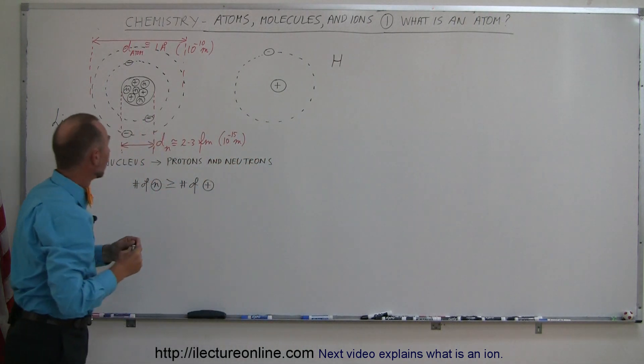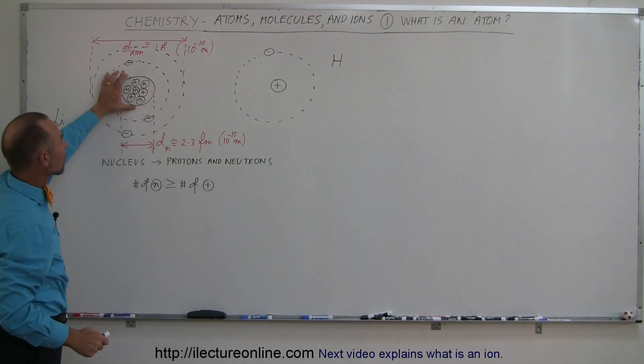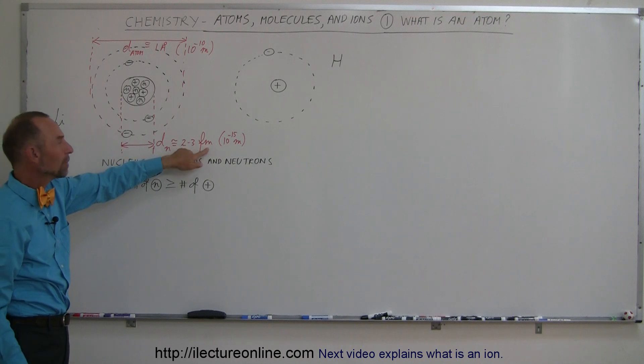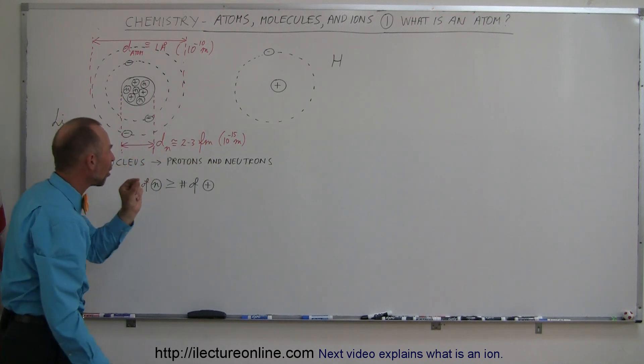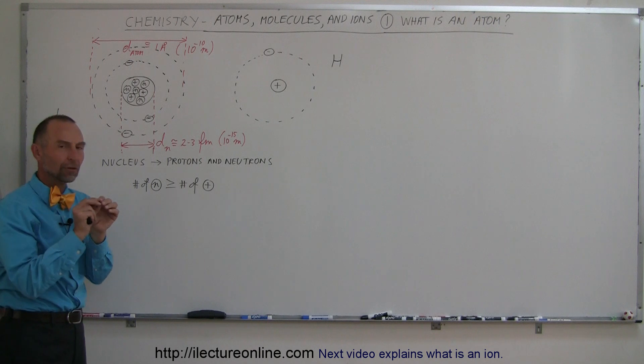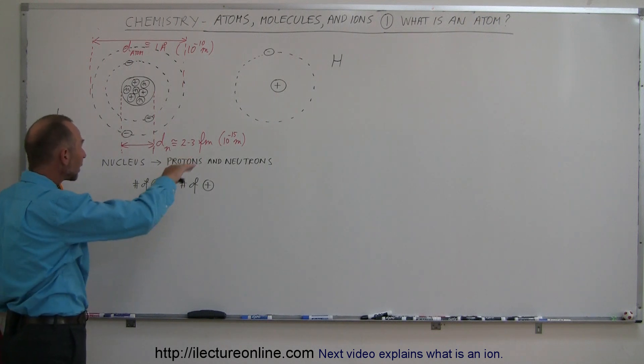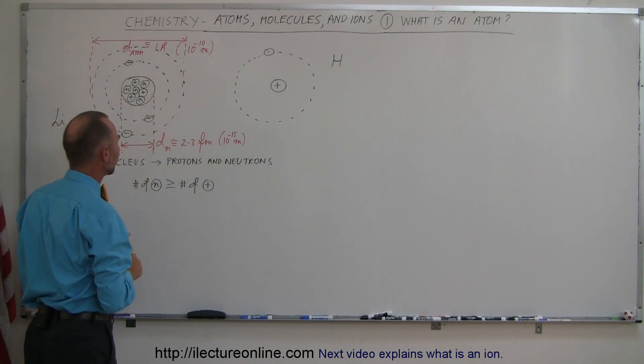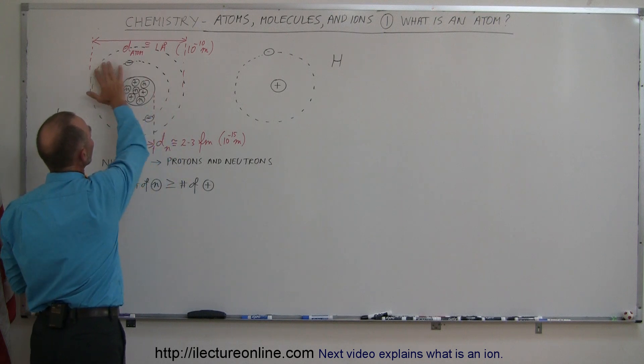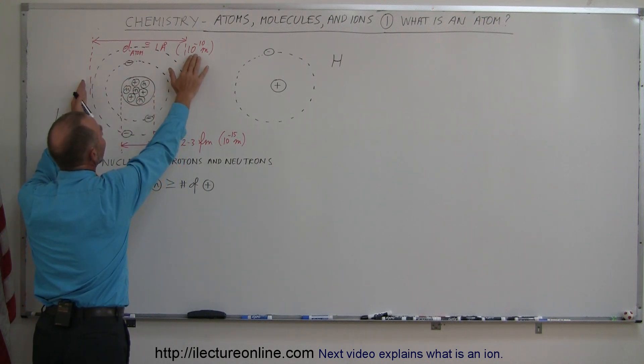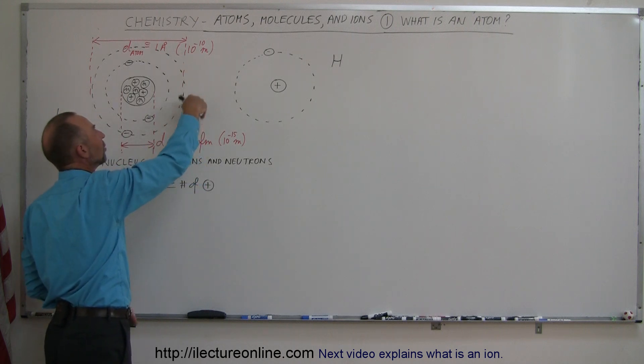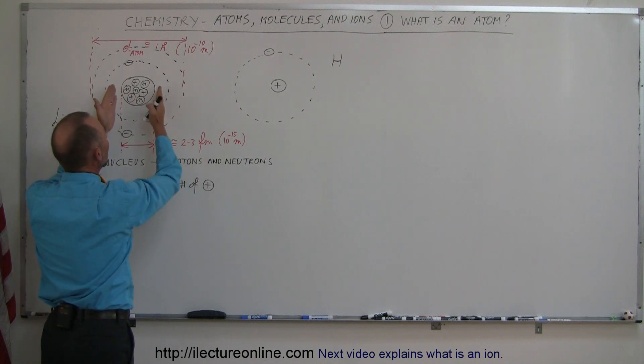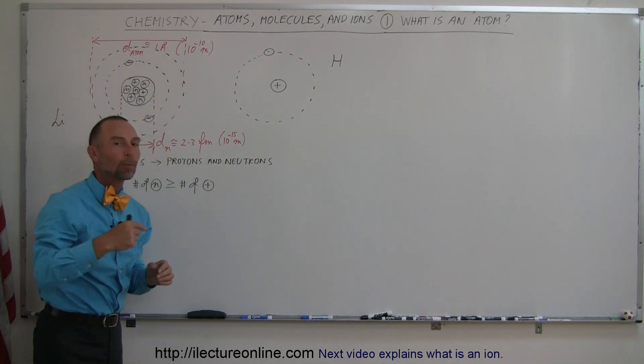Now, size-wise, notice that the nucleus tends to be extremely small. The diameter of a nucleus is usually around 2 to 3 femtometers. A femtometer is 10 to the minus 15 meters. The diameter of an atom that is made up of the electrons is typically about 10 to the minus 10 meters. There's easily a factor of 50,000 to 1 or 20,000 to 1 between the diameter of the nucleus and the diameter of the orbits of the electrons.